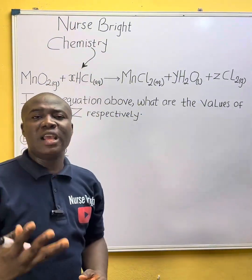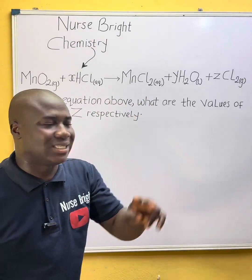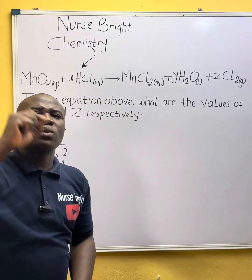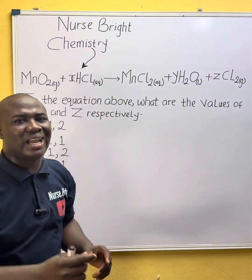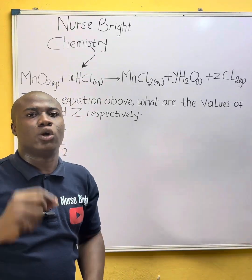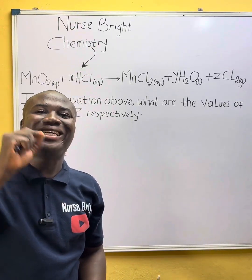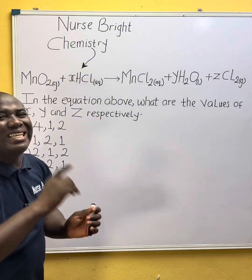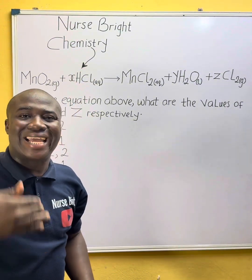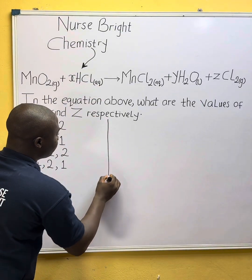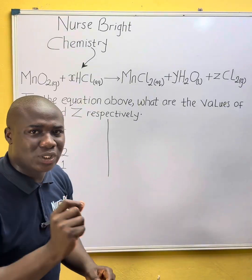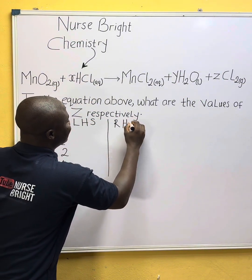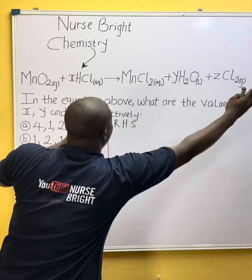You look at the reaction — a reaction has two sides. We have the product side, which is the right-hand side of a reaction, and we also have the reactant side, which is the left-hand side. You look at the reaction carefully and identify these sides. You simply divide the reaction into two sides: the left-hand side (LHS) and the right-hand side (RHS).